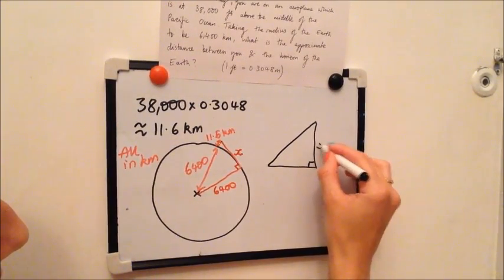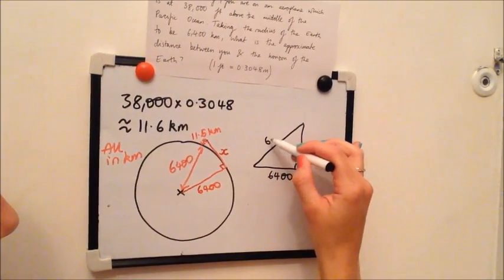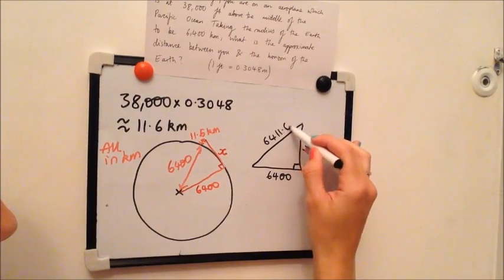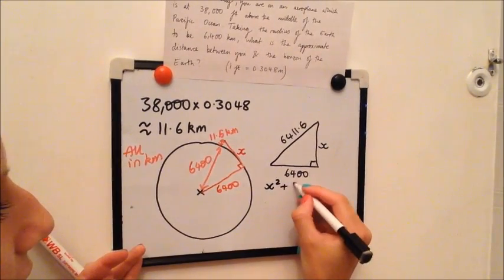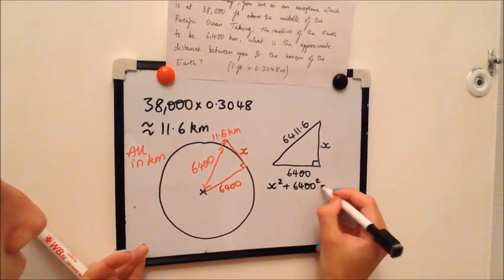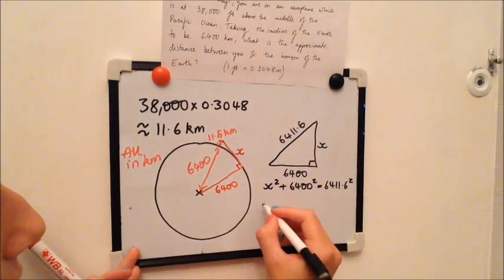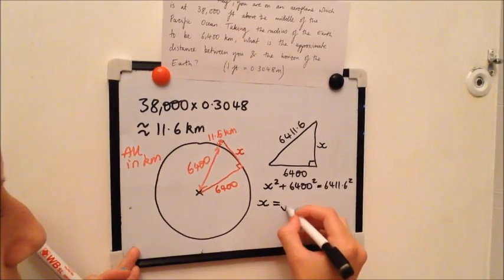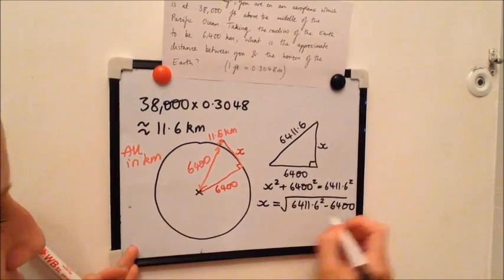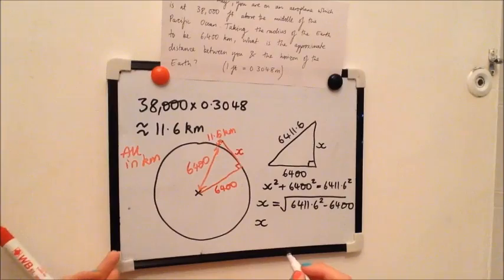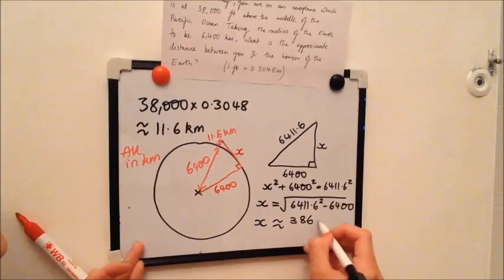...we have x here, 6,400 kilometres here and in total 6,411.6 here. And so by Pythagoras, which in full of course is this, and by rearranging this to get x as the result, you find that x, the approximate distance between you and the horizon of the earth, is roughly 386 kilometres.